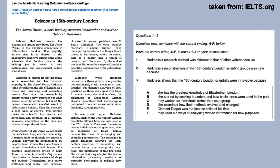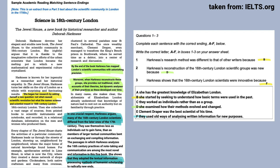The fifth question type is match sentence endings. In this question type, you are required to find the endings of sentences that are located in the passage and match them to the correct subject. First, read the questions, then try to locate them in the passage by quickly skimming each paragraph. Look at each question ending and compare it to the sentence in the paragraph — you need to find the subject and match it to the predicate. Look at what the paragraph is talking about to see if they match together.